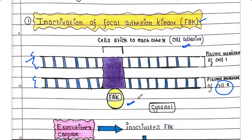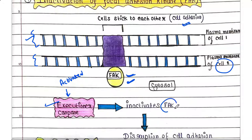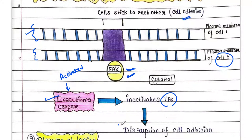The FAK protein helps in this adhesion mechanism — it is a cytosolic protein. When executioner caspase is activated, whether by the intrinsic pathway, extrinsic pathway, TNF-induced pathway, or Fas-induced pathway, it inactivates FAK. When FAK is inactivated, it disrupts cell adhesion, and the cell is no longer able to survive.